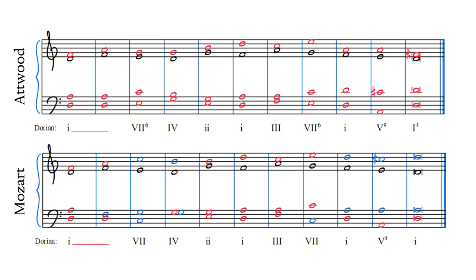Here are Mozart's corrections to Atwood's exercise. Atwood didn't make any big mistakes, like parallel fifths or anything like that, but Mozart adjusted some of the notes to improve the overall voice leading. The notes that are different are written in blue. Let's listen to Mozart's version.